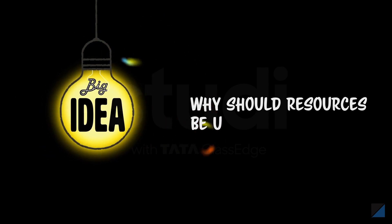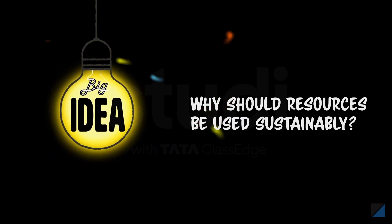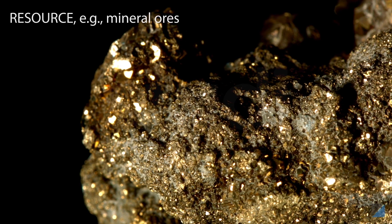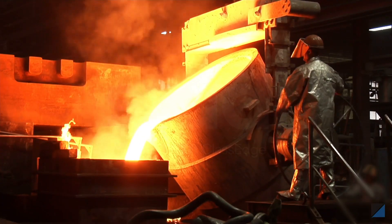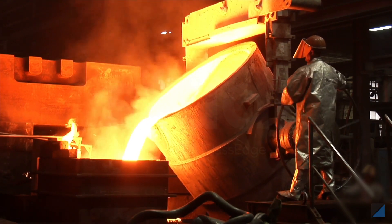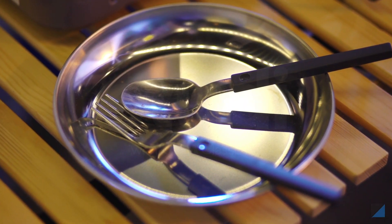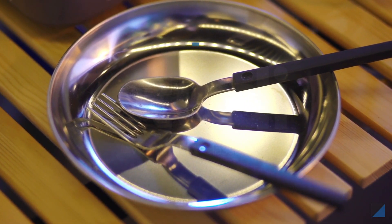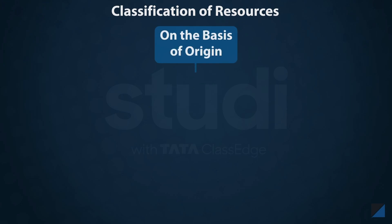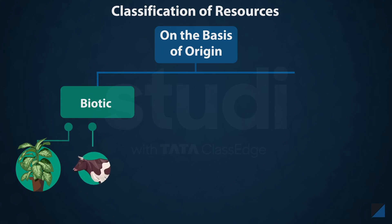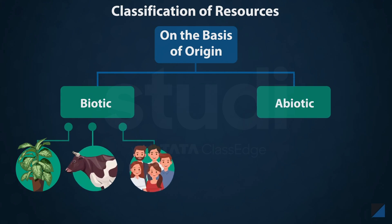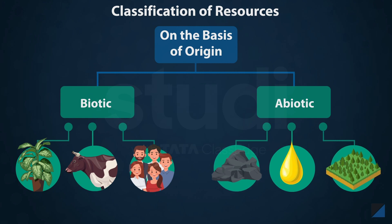Why should resources be used sustainably? A resource is something that can be used for a purpose — for example, mineral resources are used for making a variety of things for our everyday use. Resources can be classified based on their origin as biotic resources like plants, animals, and humans, or abiotic resources such as minerals, oil, and land.